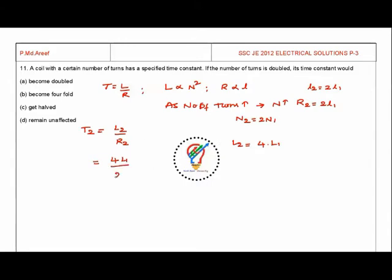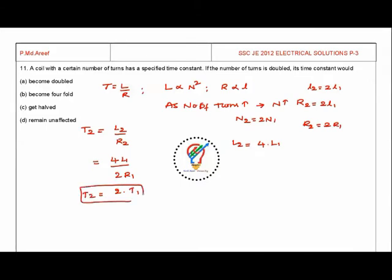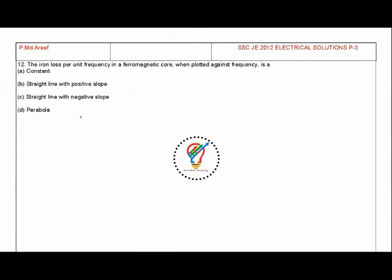R2 is 2 times R1, proportional to the number of turns. Therefore T2 = 4L1 / 2R1 = 2 times the original time constant. The answer is option A.